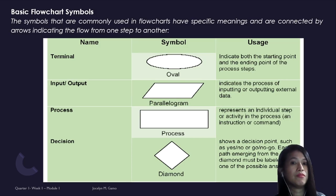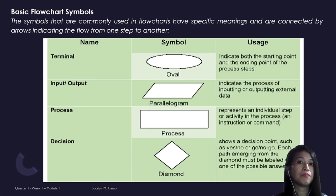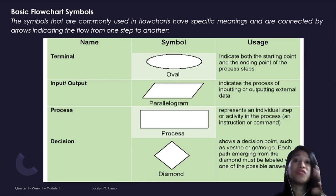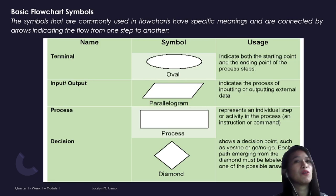The next element is the input and output symbol, which is the parallelogram shape. This symbol allows you to input, encode, or display a certain process. For example, if you want to display the numbers five and seven, you don't type them directly — you use variables. Letter A is for number five and letter B is for number seven, just like a container in mathematics. So to input two numbers, you write question mark A and B, where A is five and B is seven.